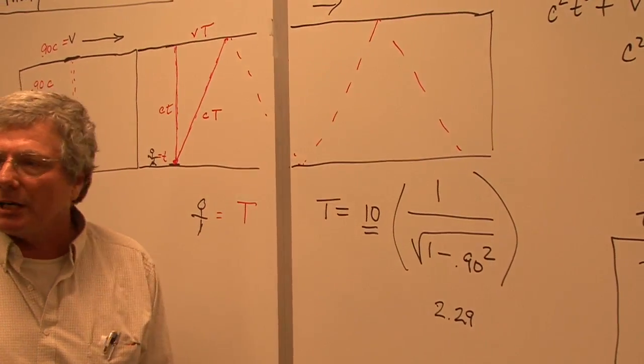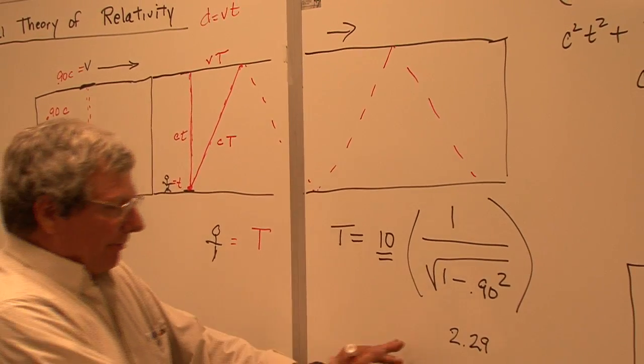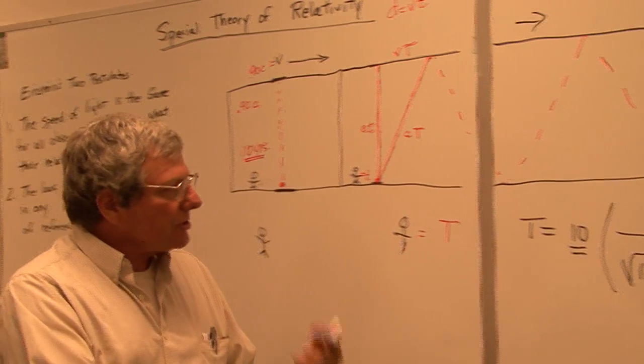So 2.29, we'll just keep it like that. Therefore, it ends up, that's our gamma factor, how much time is actually being stretched out.